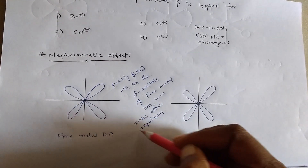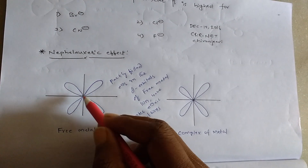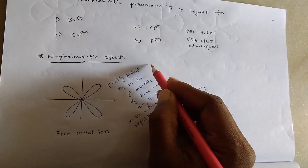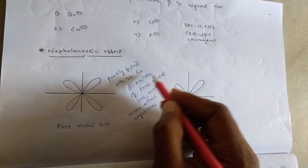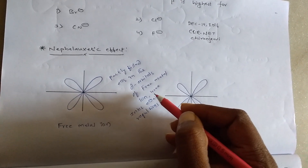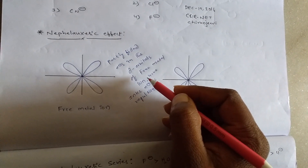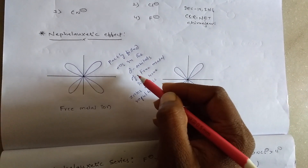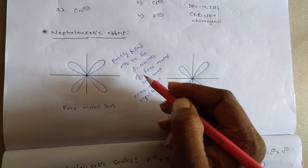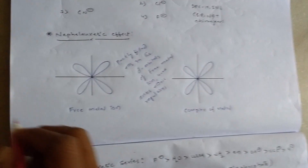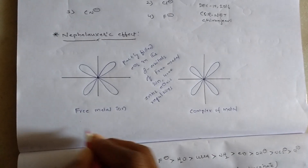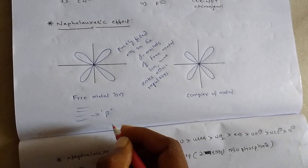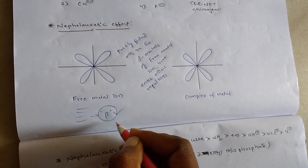Because of these inter-electronic repulsions in the free metal ion, the d-orbitals have different energy levels. To represent these different energy levels, each energy level can be expressed by an inter-electronic repulsion parameter — each different energy level is given by the inter-electronic repulsion parameter, simply called beta.